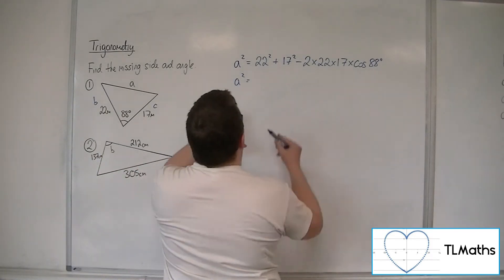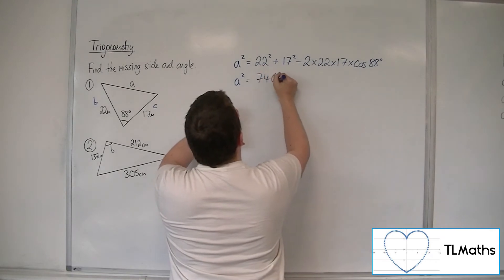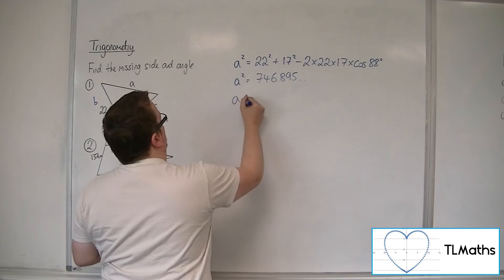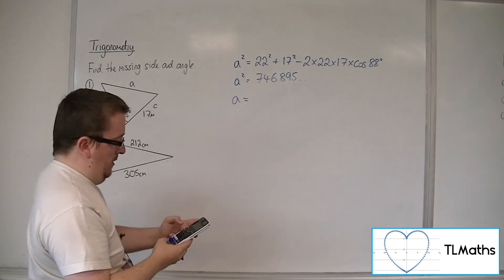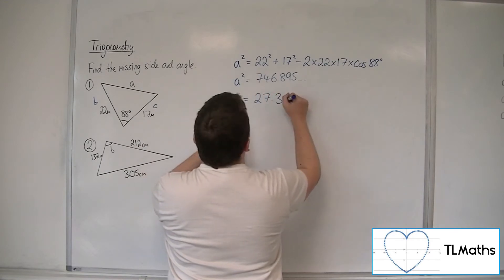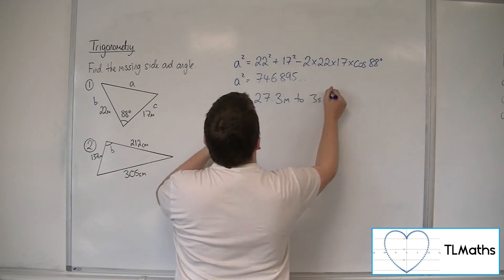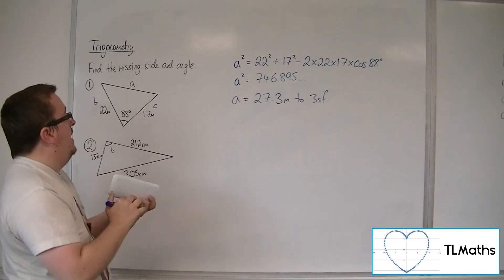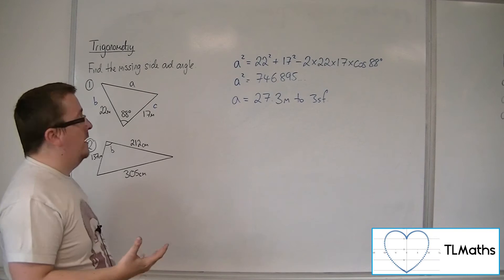Gets me 746.895, etc. So then square root answer key is 27.3 metres to 3 significant figures. And so that is my answer to number one.